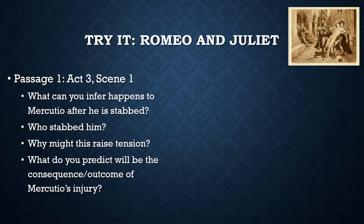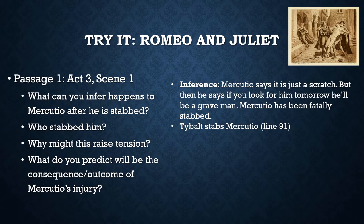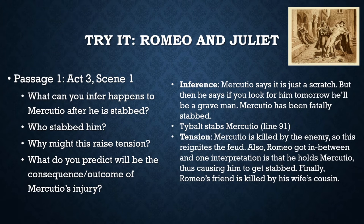Let's discuss the questions. What can you infer happens to Mercutio after he is stabbed? Mercutio says it is just a scratch — do you notice the irony? But then he says if you look for him tomorrow, he'll be a 'grave man.' Notice the play on words with the word grave. Mercutio has been fatally stabbed. Who stabbed him? Tybalt — that was in line 91. This raises tension because Mercutio is killed by his enemy, a Capulet, which reignites the feud. Romeo got in between Mercutio and Tybalt, and one interpretation is that he held Mercutio back, thus actually causing his own friend to get stabbed. Romeo's friend is killed by his wife's cousin.